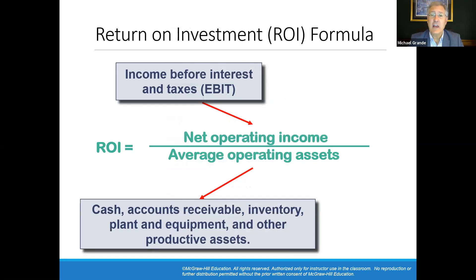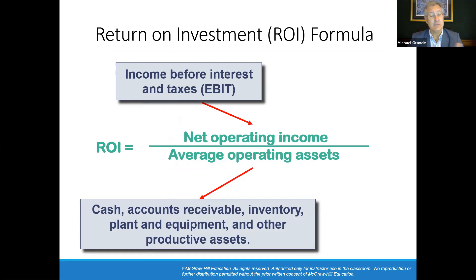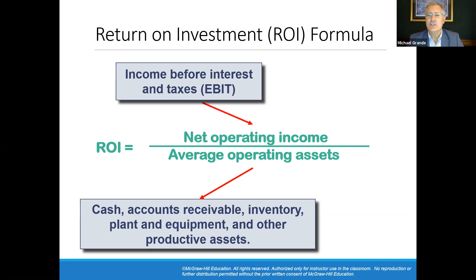Here's our basic formula for calculating return on investment: net operating income divided by average operating assets. Net operating income is not equal to net income. Net income is the bottom line on the income statement, but net operating income is income before interest expense and before income tax expense. Operating assets are those which generate operational income and are used in the operations of the business.